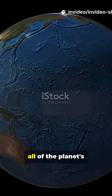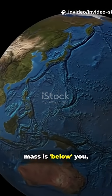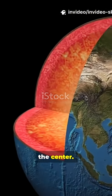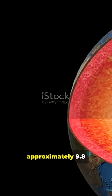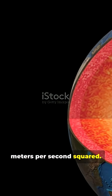When you are on the Earth's surface, all of the planet's mass is below you, pulling you towards the center. The gravitational force is at its maximum here, approximately 9.8 meters per second squared.